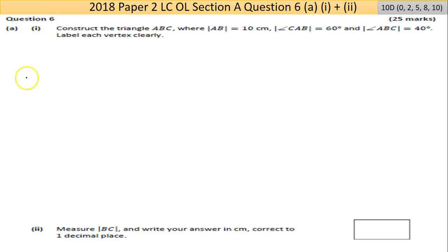Part A has parts 1 and 2 marked together. Part 1 says construct the triangle ABC where the length of AB equals 10 centimetres, the angle CAB (the middle letter matters) is 60 degrees, and the angle ABC is 40 degrees. Label each vertex clearly.